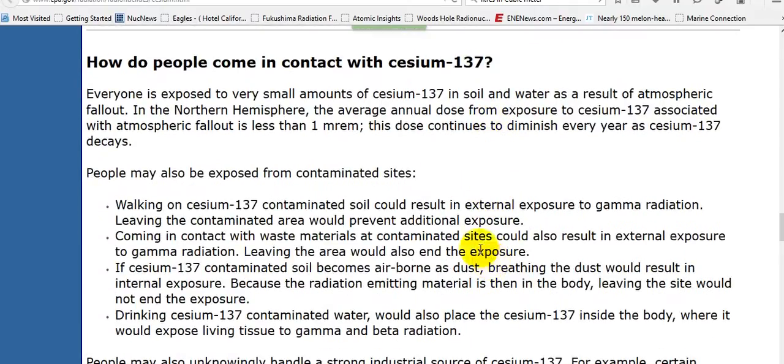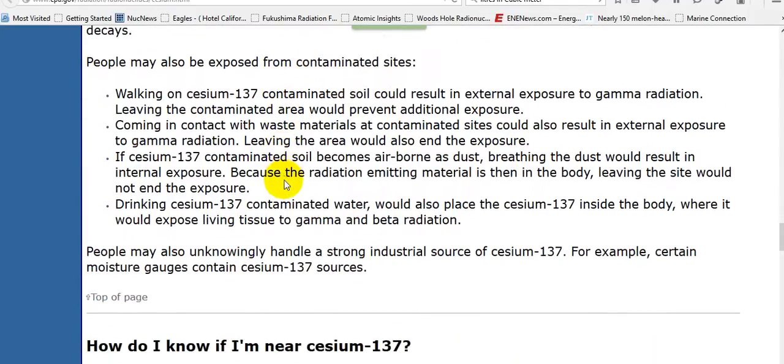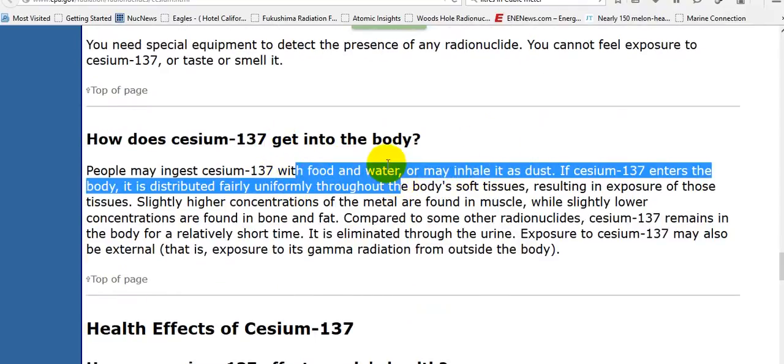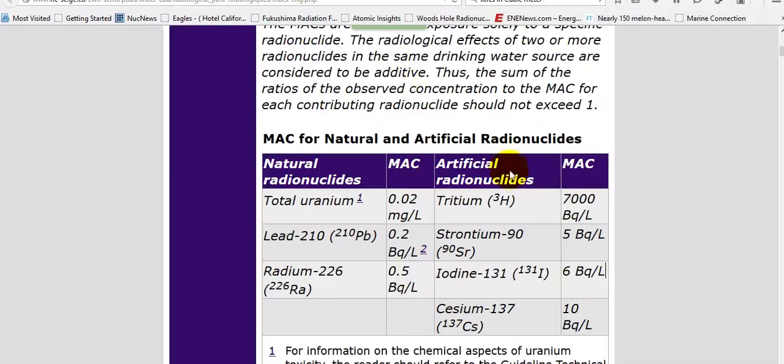How do people come in contact with cesium-137? Everyone is exposed to a very small amount of cesium in the soil and water as a result of atmospheric fallout. People may be exposed from contaminated sites. It gets in the body with food and water.